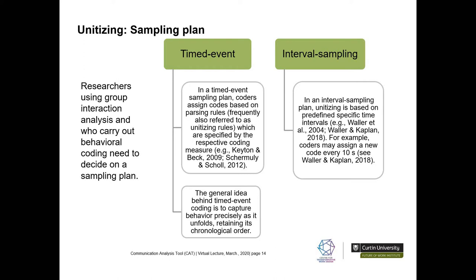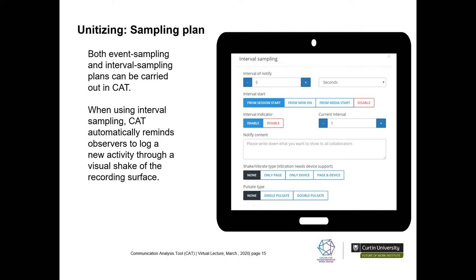There is a common distinction made between sampling plans: timed event or event sampling versus interval or time sampling. In timed event sampling, coders assign codes based on parsing rules specified by the respective coding measures. In interval sampling, unitising is based on predefined specific time intervals — for example, coders might assign a new code every 10 seconds. The unitising approach largely depends on the coding scheme selected and the constraints of the research environment. Both types of sampling plans can be carried out in the CAT.